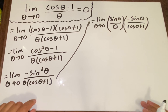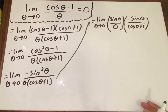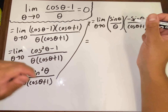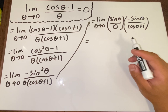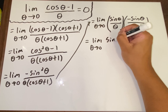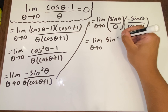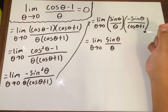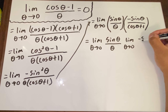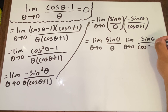The limit laws — specifically the limit of a product is the product of the limits, as long as both limits exist — mean we can split these up and apply the limit to each one separately. So this becomes: the limit as θ→0 of (sin θ)/θ, times the limit as θ→0 of negative sin θ over (cos θ + 1).